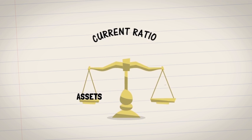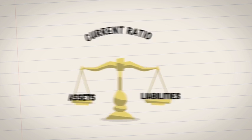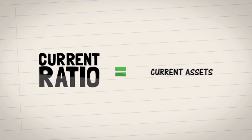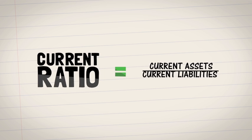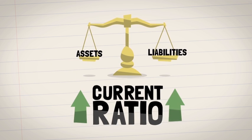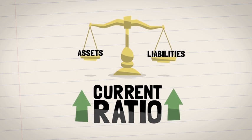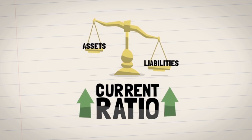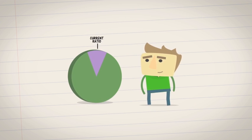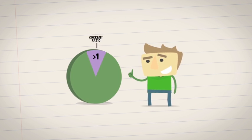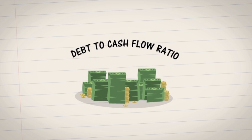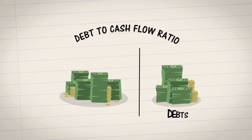The fourth essential ratio is the current ratio. This measures a company's current assets against its current liabilities. To calculate the current ratio, simply divide the current assets by the current liabilities. The higher the ratio, the more likely the company will be able to cover short-term liabilities. A good current ratio is anything above one.